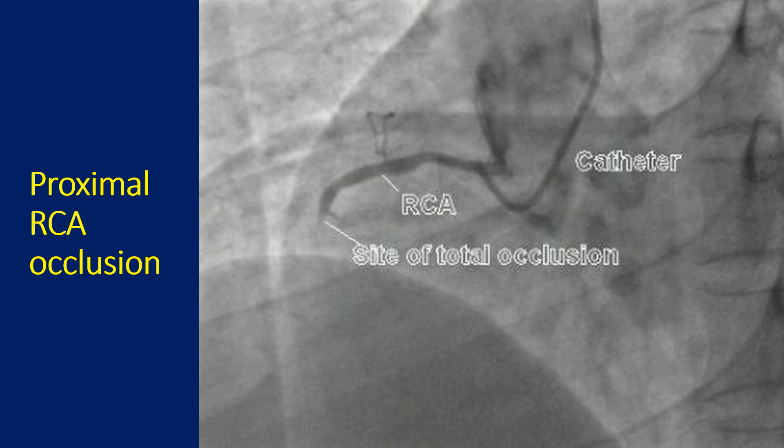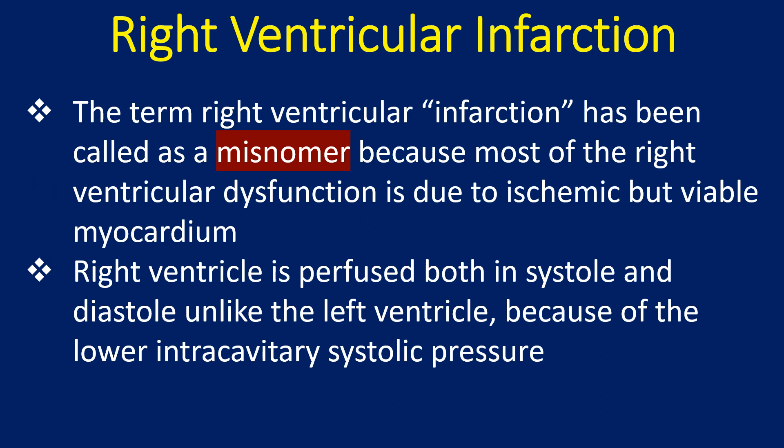These could be right atrial branches. The right atrium is usually supplied by an anterior artery which often gives rise to the sinus node artery, and a lateral artery which supplies the right atrial free wall. The term right ventricular infarction has been called a misnomer because most of the right ventricular dysfunction is due to ischemic but viable myocardium.